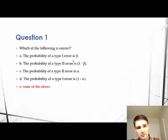So which of the following is correct? The probability of a type 1 error is beta - no, it's alpha. The probability of a type 2 error is 1 minus beta - that's not true. The probability of a type 2 error is alpha - no, it's beta, as we discussed. And the probability of a type 1 error is 1 minus alpha - no, it's just alpha. So we know none of these are true. E is the correct answer, which is none of the above.